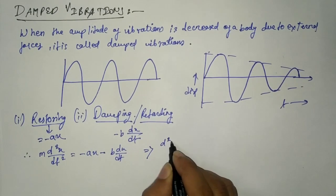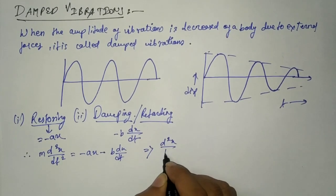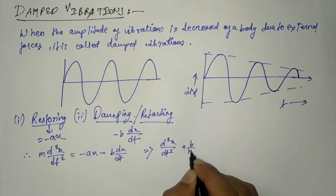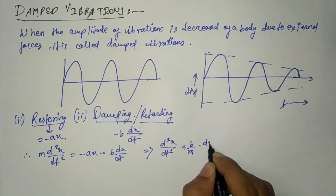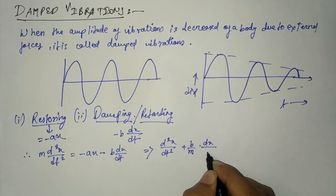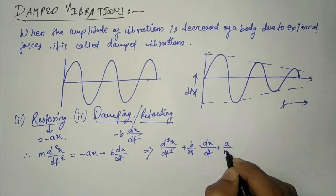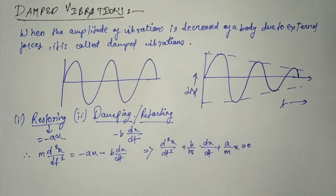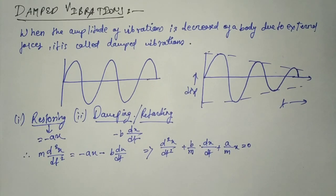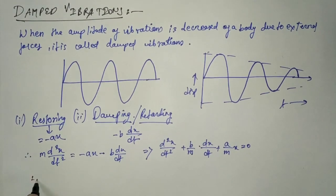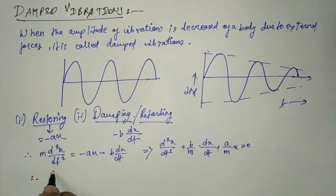The damping force, or retarding force, is proportional to velocity and is given by −b(dx/dt), where b is the damping coefficient defined as damping force per unit velocity. By combining these two forces acting on the particle, we can write the equation of motion for damped vibration as: m(d²x/dt²) = −ax − b(dx/dt), where m is the mass of the body.